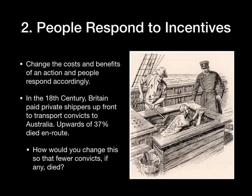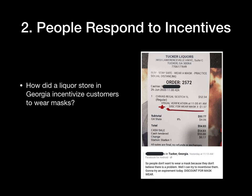Now the shipper has a vested interest — you change the incentives, you change the behavior. Another example: a liquor store in Georgia wanted people to wear masks during the pandemic. How did they incentivize them? They gave a 3% discount on your purchase if you wore a mask.